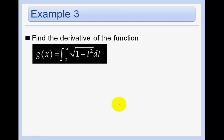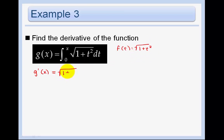Example: find g prime where f of t equals the square root of 1 plus t squared. From the Fundamental Theorem of Calculus, g prime of x is just f of x — the square root of 1 plus x squared. That's it. You must have an x because we evaluate at wherever x is. We don't need to worry about the lower limit number — it could have been 5 or negative 2 — it doesn't matter because it drops off when we take the derivative.